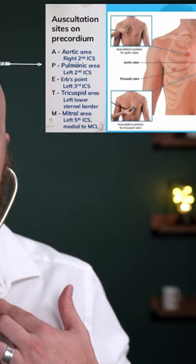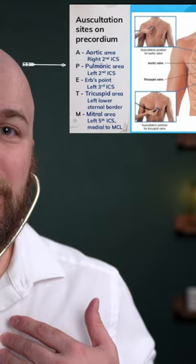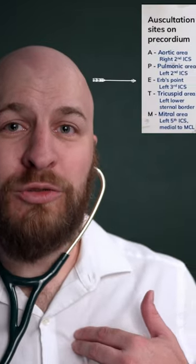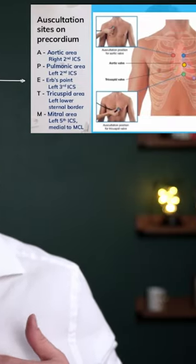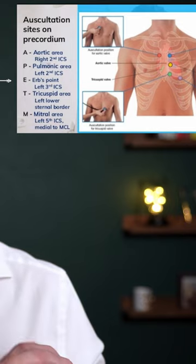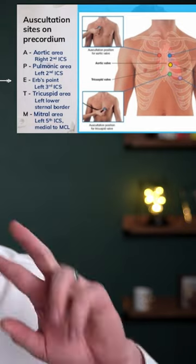In that same second intercostal space on the left, that's where you'll hear your pulmonic valve. Then move down one more space on the left side to Erb's point, where you should hear the split between the lub and dub.